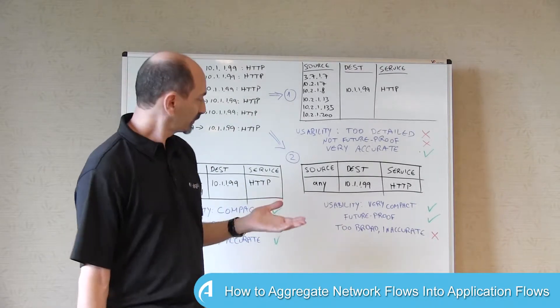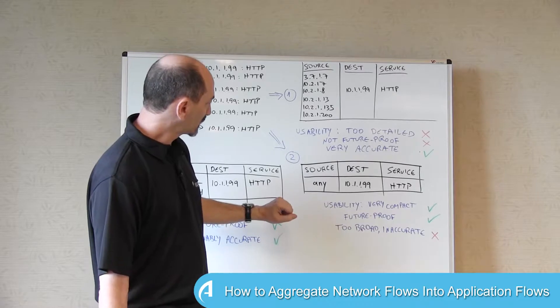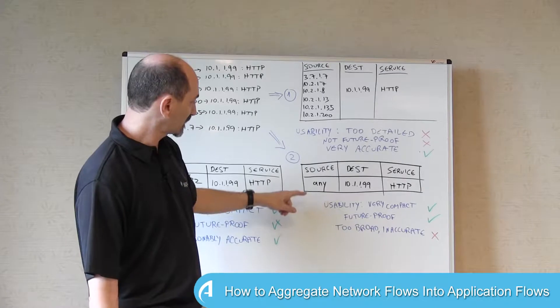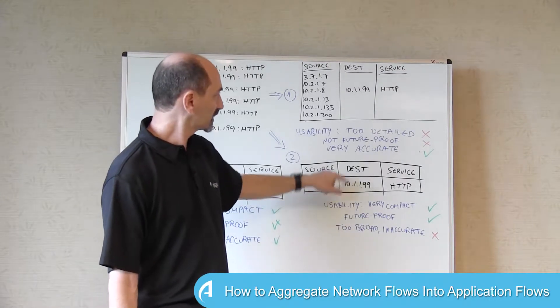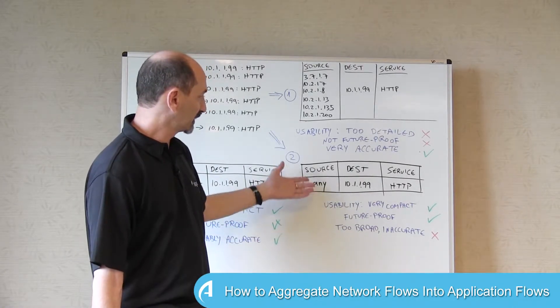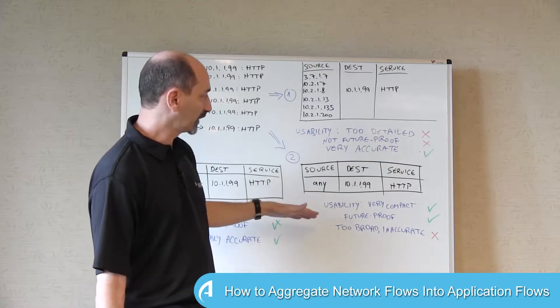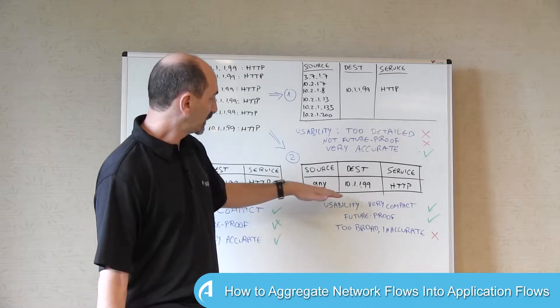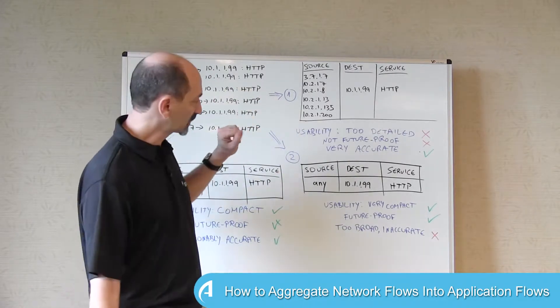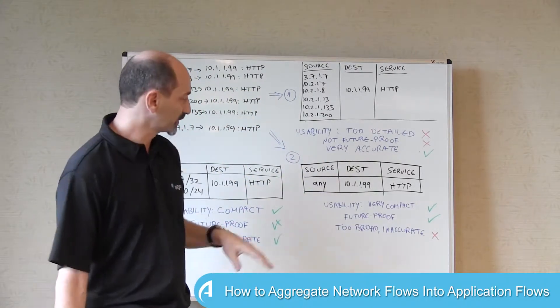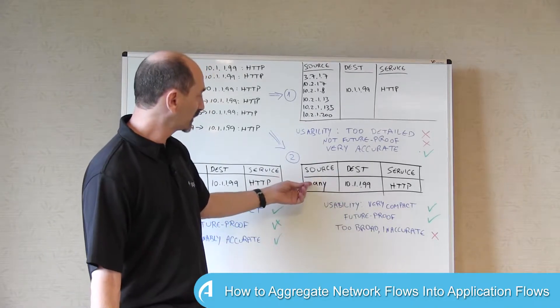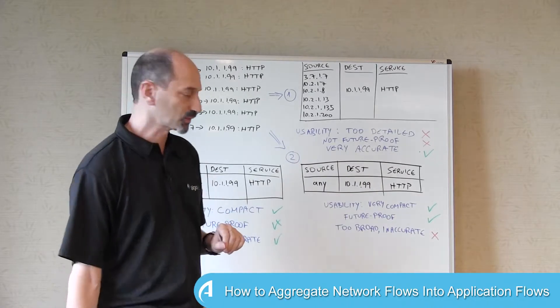An alternative is what we have here in number two. Instead of having the individual IP addresses listed in the source, we just have the source of any. And then the destination would be that web server and the service is HTTP. So in terms of usability, this is great. This is very compact, just a single record showing what might happen, capturing or describing all the flows that were actually observed and is completely future proof. Every possible IP address could appear in the source and the flow still describes it.